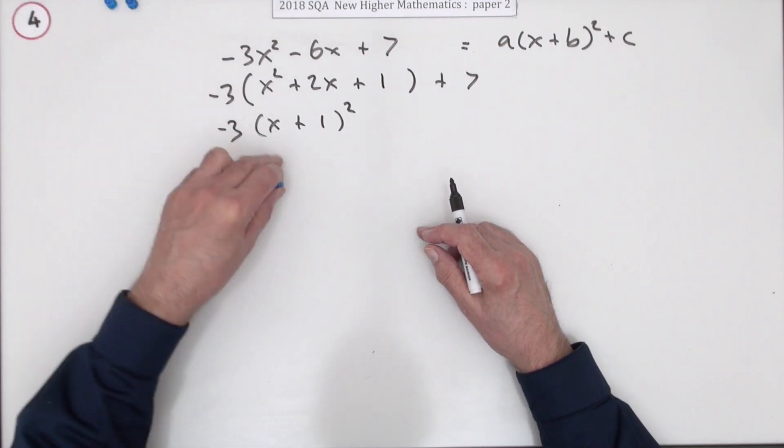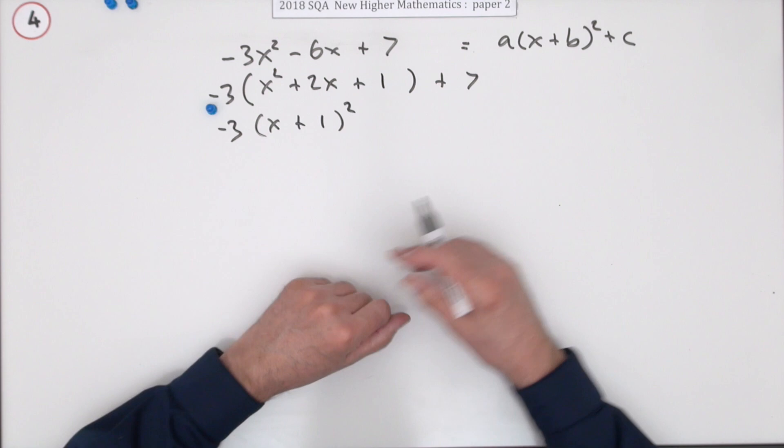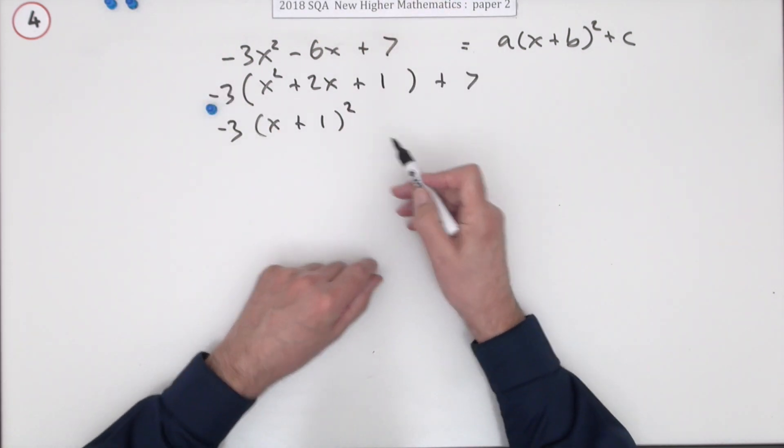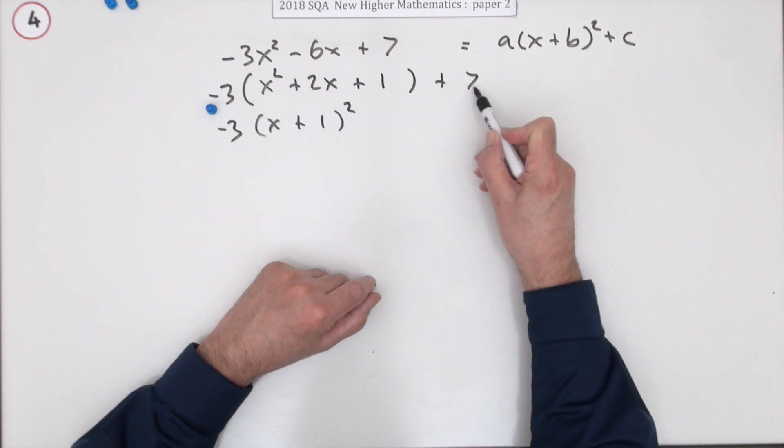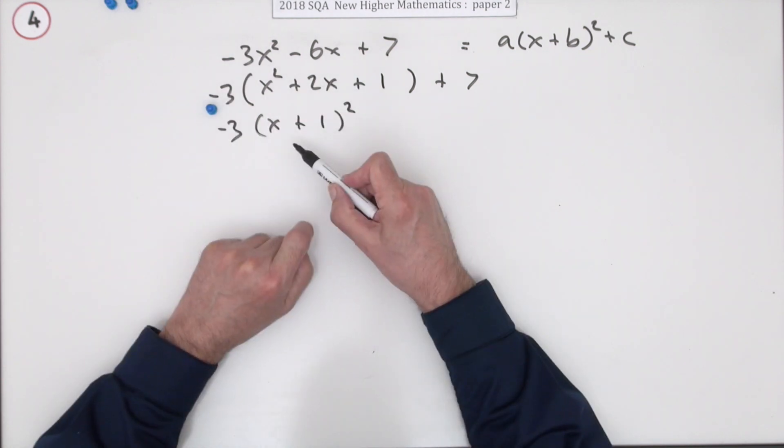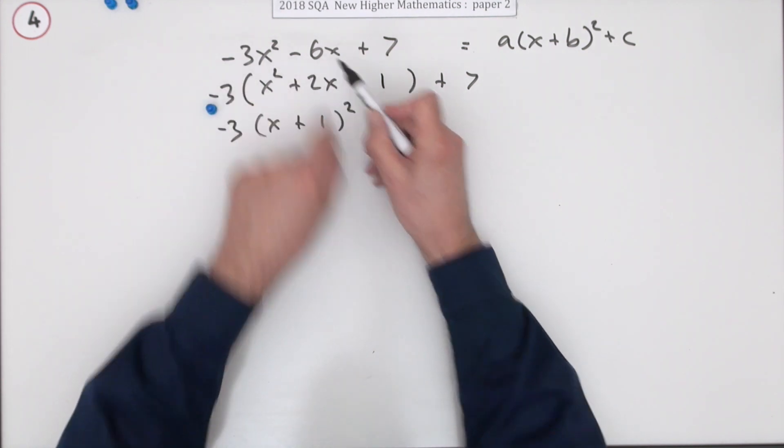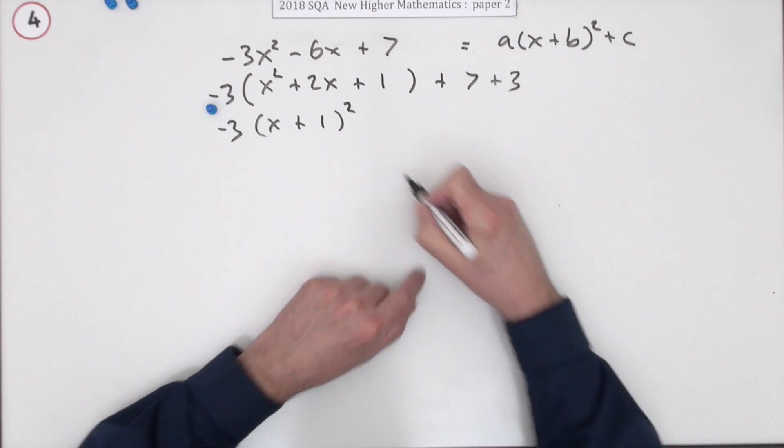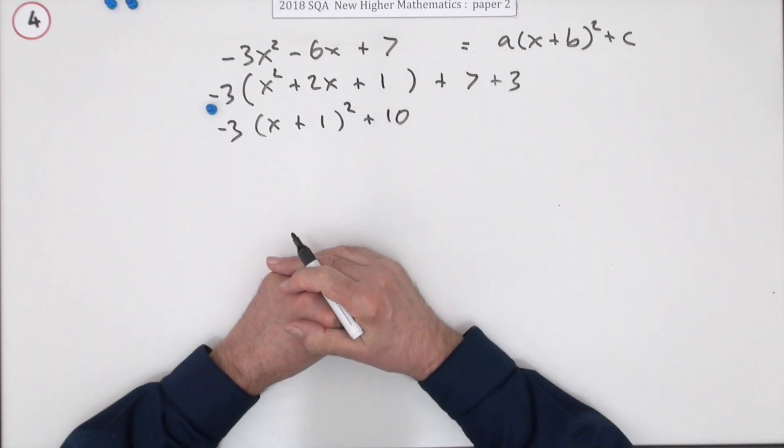Now I sort of said straight away, if you're doing it this way, you get marked for taking that negative 3 out. Whether you just take it out of those two or all three, it doesn't matter. Now the point is though, this expression I've written here isn't the same as that. Negative 3x squared makes negative 3x squared. Negative 3 times 2x makes negative 6x, and the 7 was there. But there's an extra negative 3 times 1 that shouldn't be there. And that negative 3 times 1 will have to be cancelled out. And to get rid of a negative 3 times 1, you do a plus 3. And that's what's going to give you the 10.